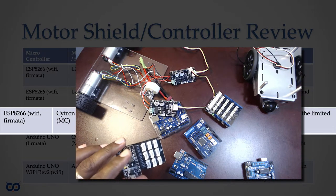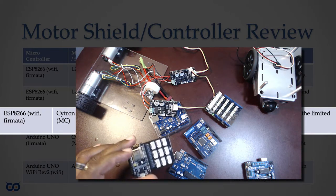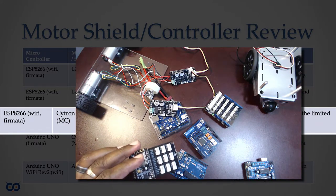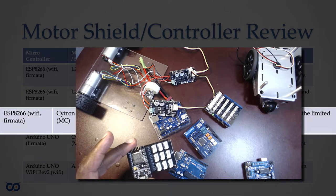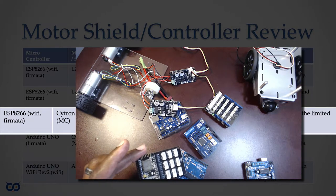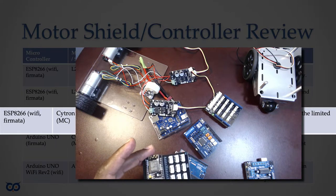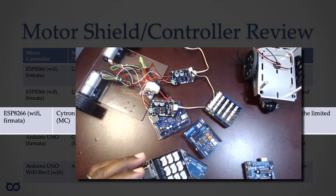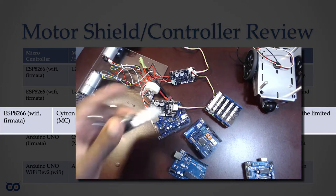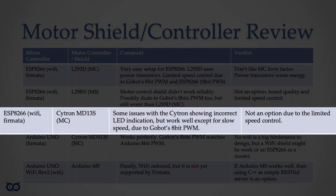I'll consider ESP8266 with the Cytron board a no-go, primarily because the hardware-level signaling tops out at 255 via Firmata. When I tried software-based PWM simulation and put it on my logic analyzer, the signal quality was all over the place — so software PWM on the ESP8266 isn't reliable either. I may retest with the gear motors just for completeness, and I'll report back if anything interesting comes up.